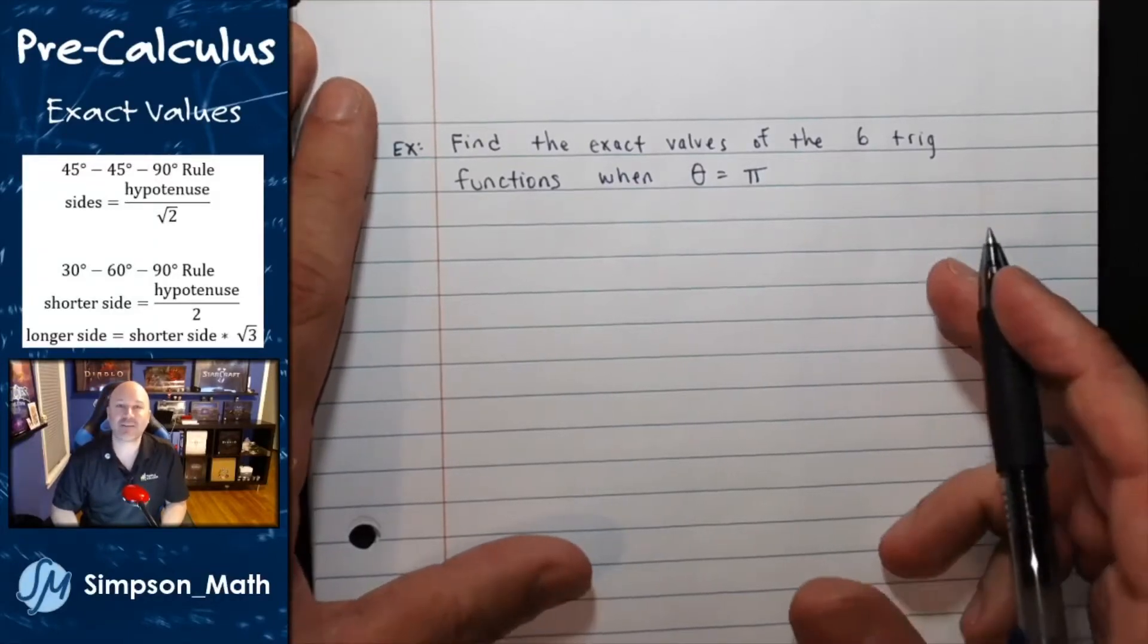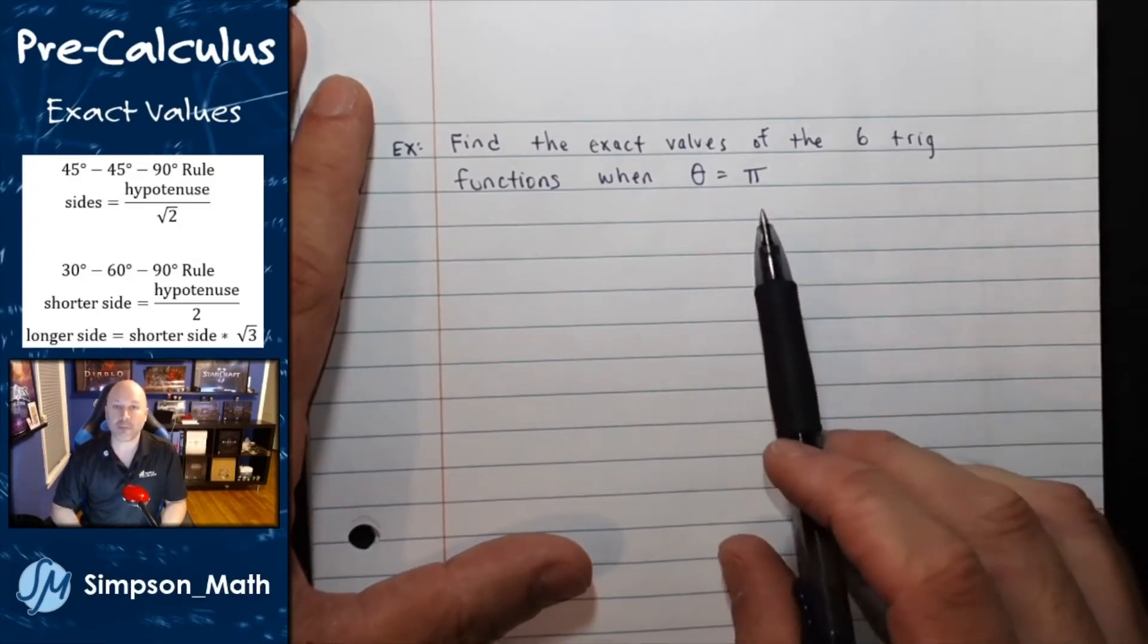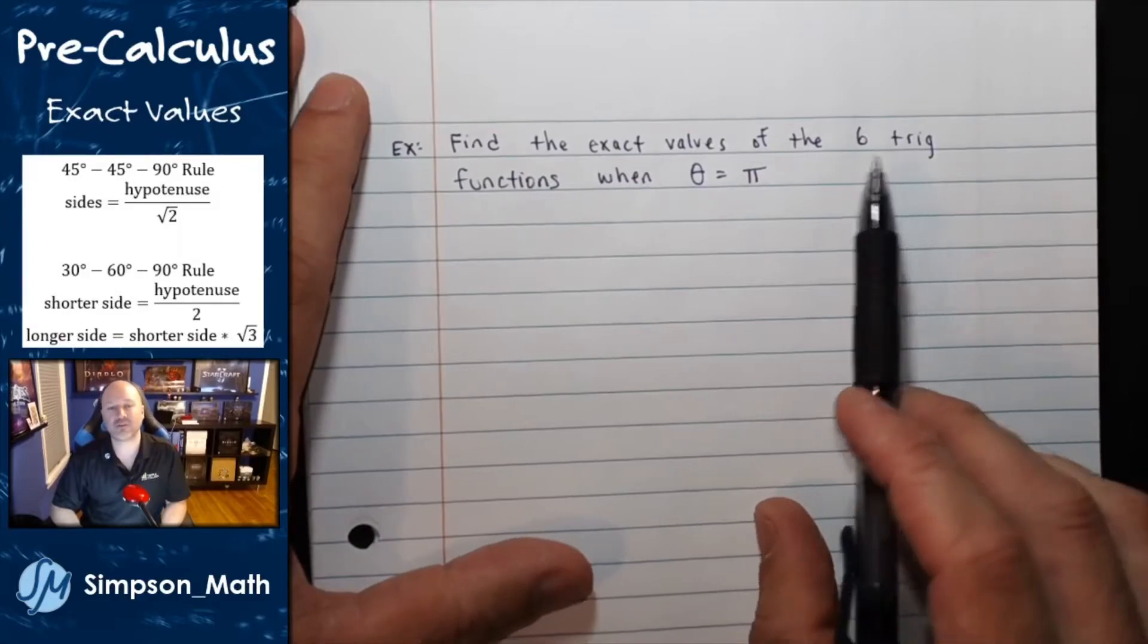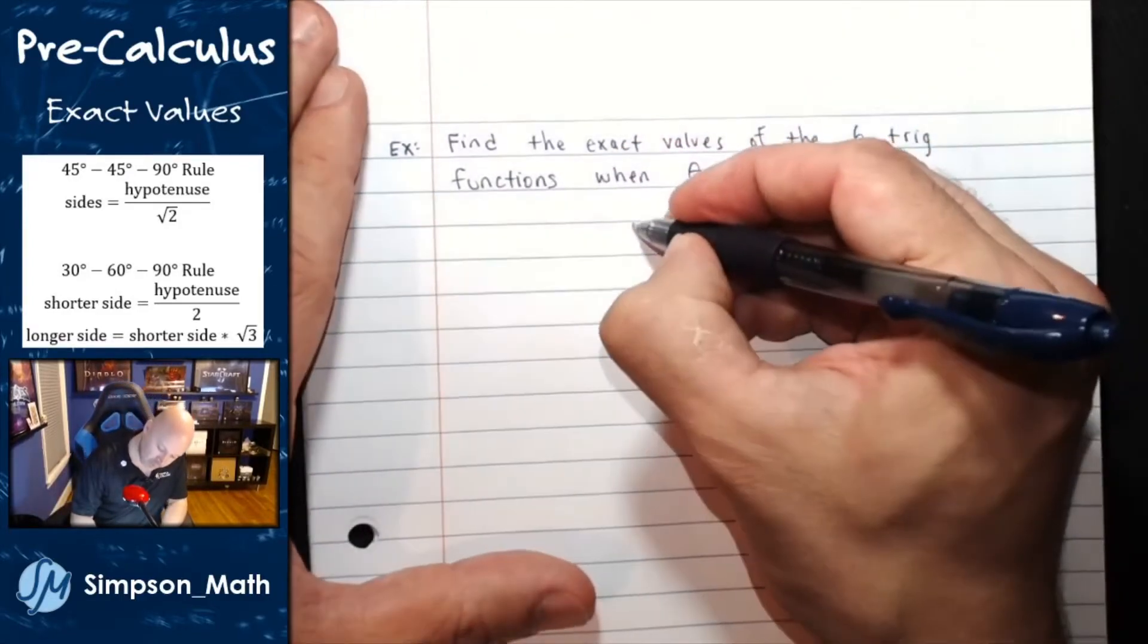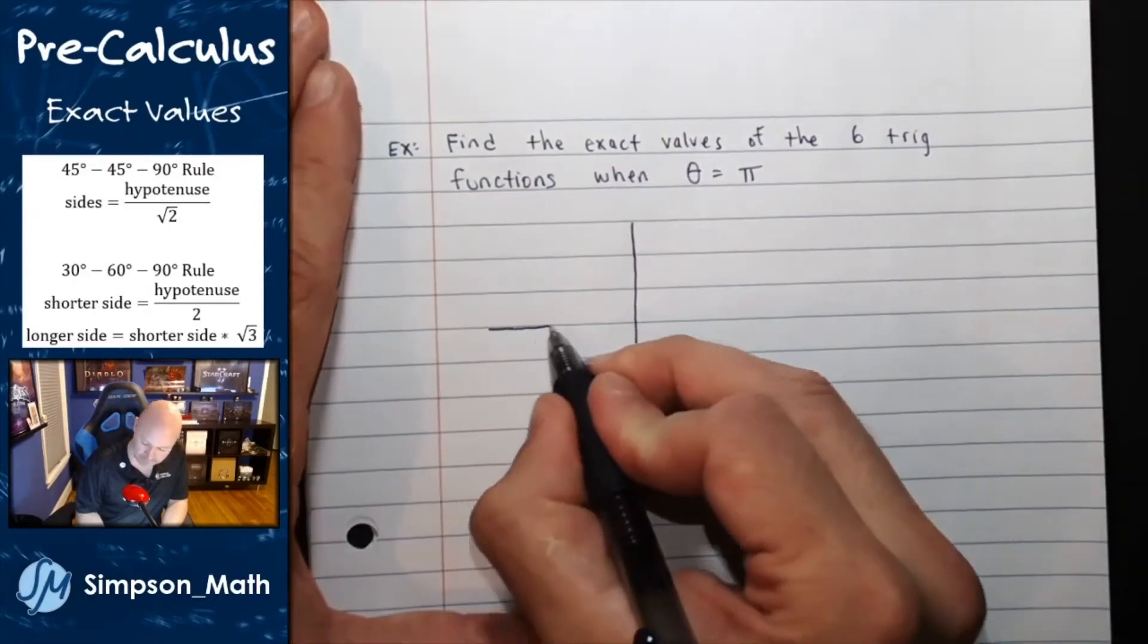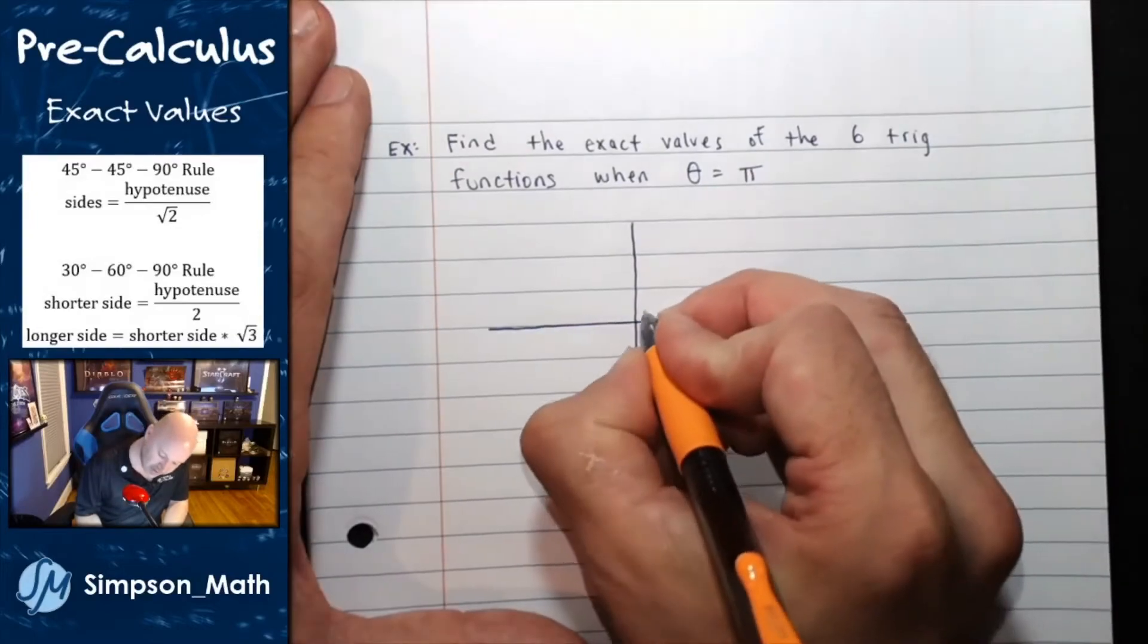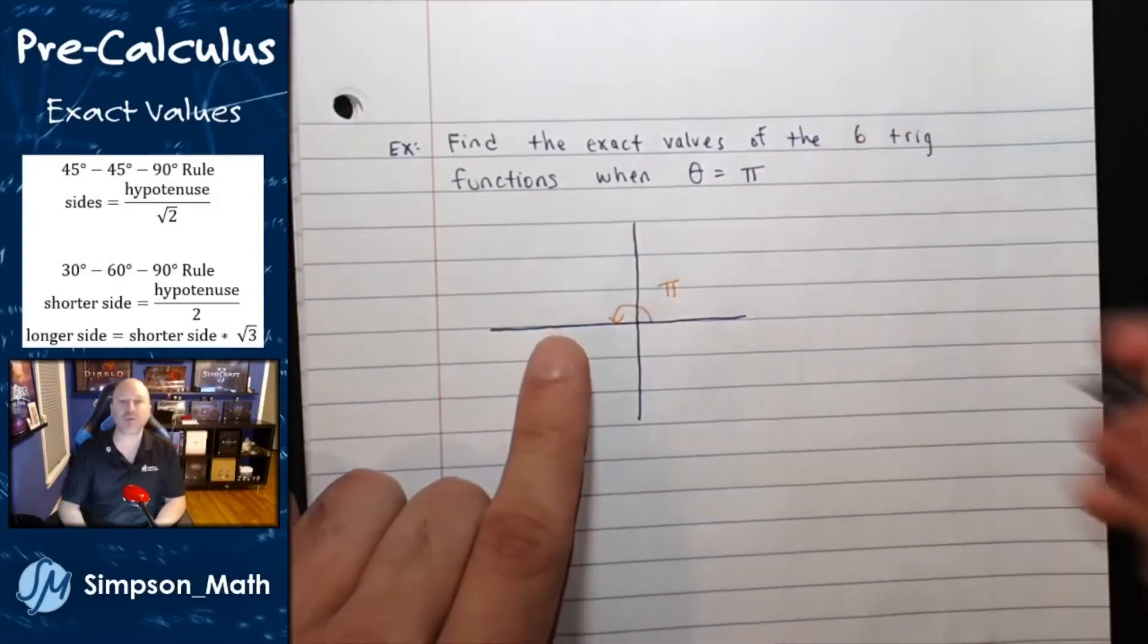Now let's find the exact value of a quadrantal angle. So I want to find in this example all six trig functions of pi. So let's draw the Cartesian plane and angle pi. Pi is just 180 degrees.